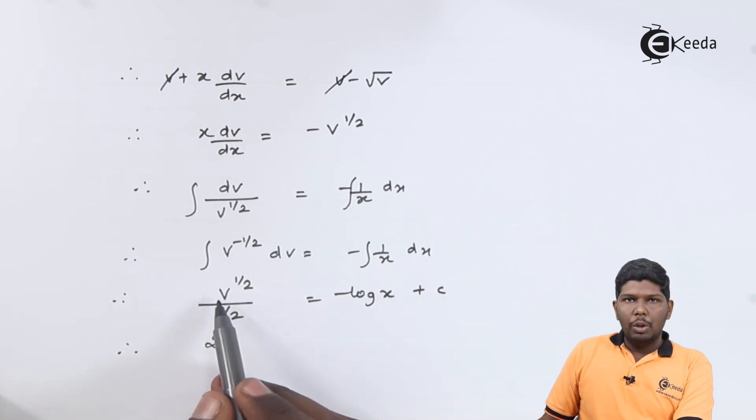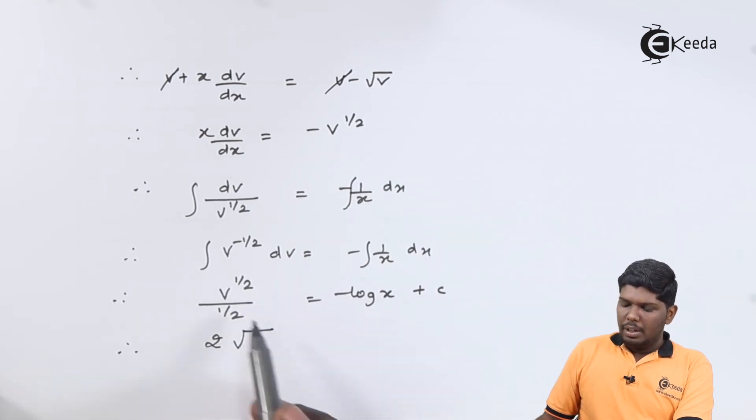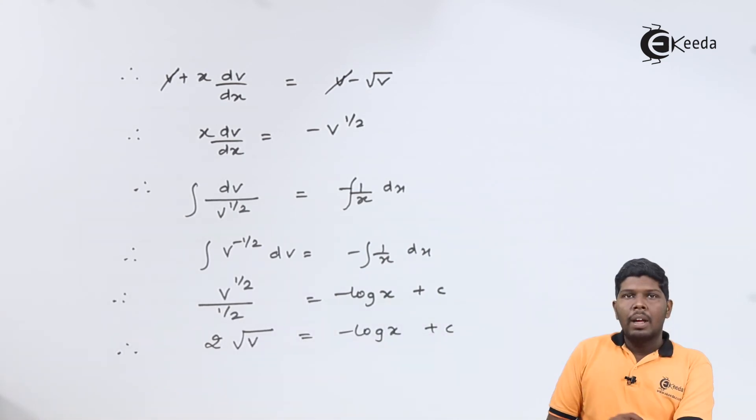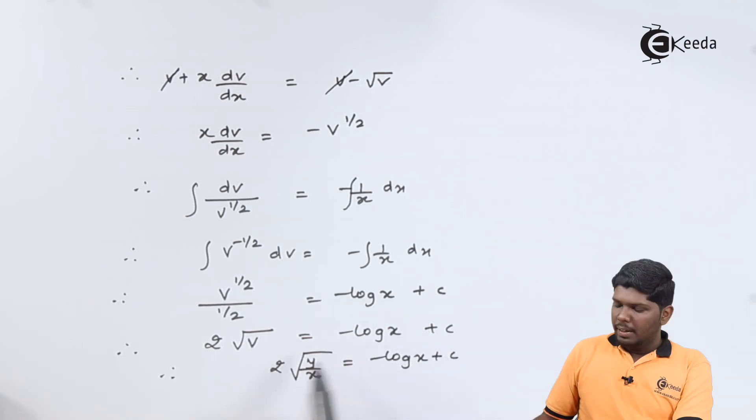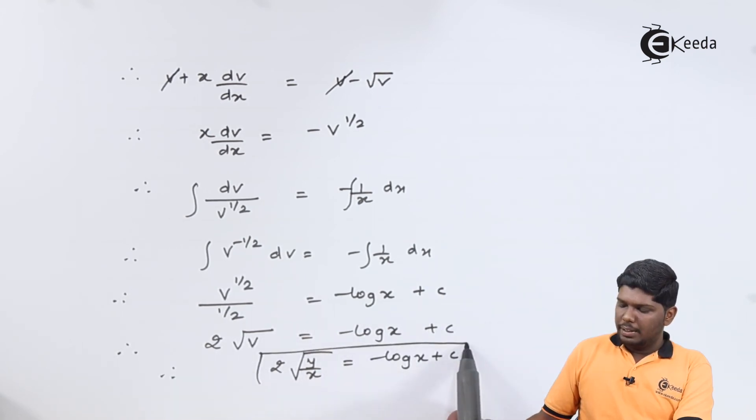2 will come in the numerator. Again, we have v as square root. And after that, we need to resubstitute the value of v that will be y by x. This becomes our final answer.